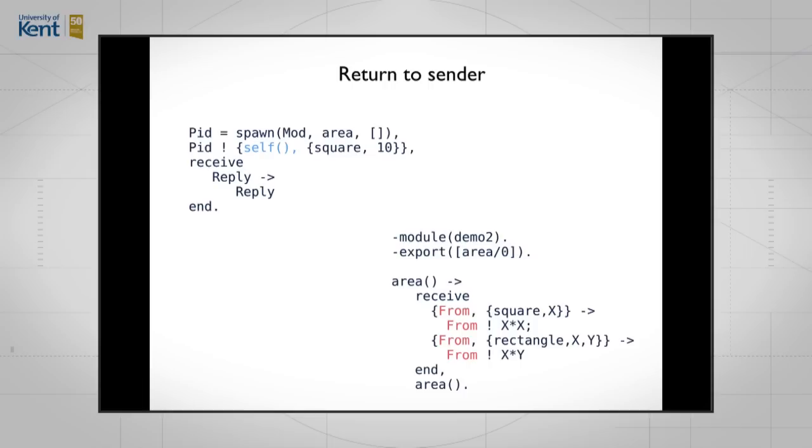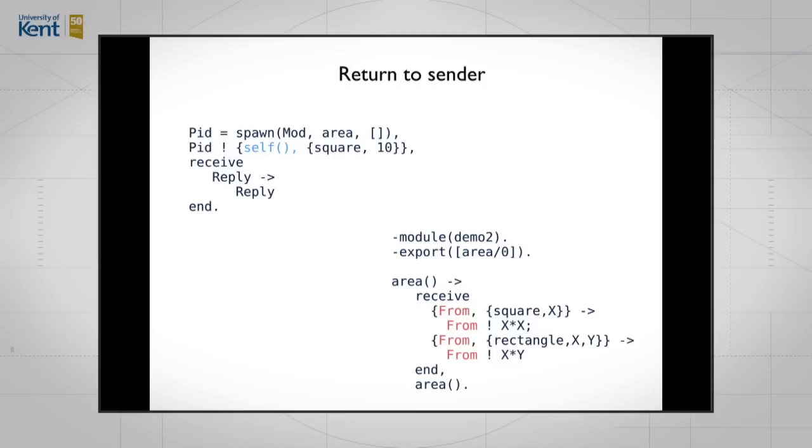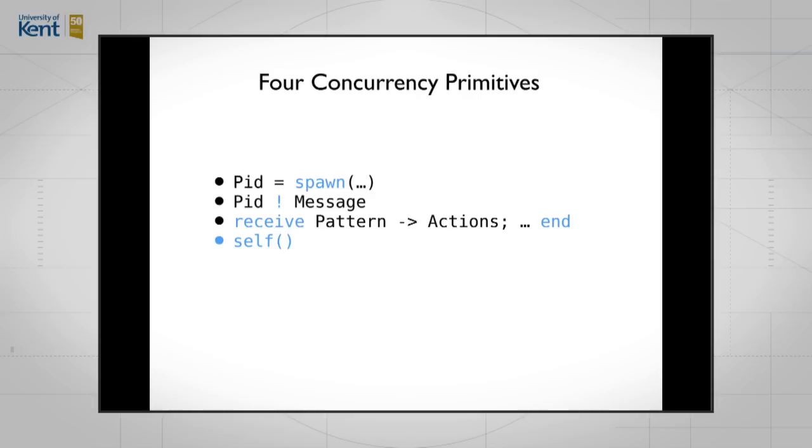In fact, any process that was waiting, any other process that happened to send a message to the process that sent the square message to the area process would be received by that process. We might get confused, we might get the wrong message in. So the next modification to this program is to again change it slightly. If we start at the client side and say, okay, let's spawn the process, we'll send it a message, and then we'll wait. PID bang self square 10. That sends a message to this process called PID. And then we wait for a message that can only come back from the process we sent the message to. And that's what this pattern matching does. I've introduced a few more things there. I've changed the code slightly and I've introduced this primitive self. Self is the identity of the process itself. And we can pattern match on that and so on. That's pretty easy.